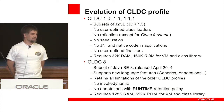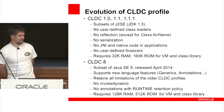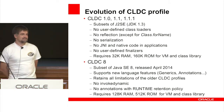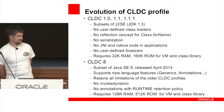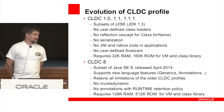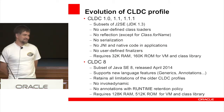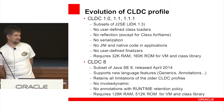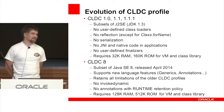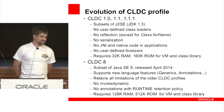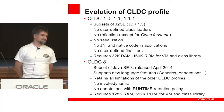There is also no invokedynamic and no annotations with runtime retention policy — only class and compile-time retention. It requires more memory: 128K ROM and half a megabyte of ROM for VM and class libraries. So it's a completely different universe with completely different restrictions.